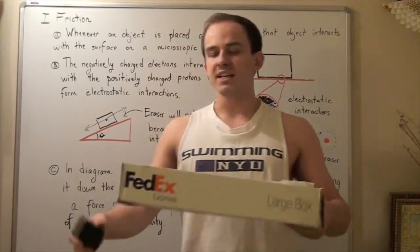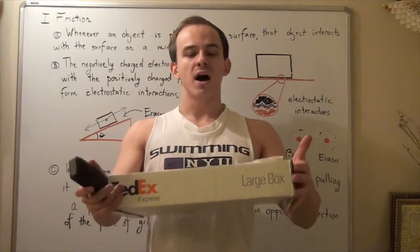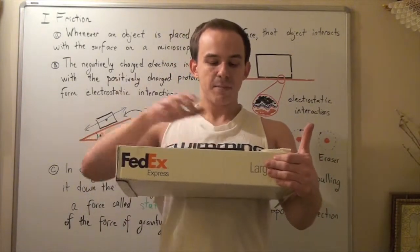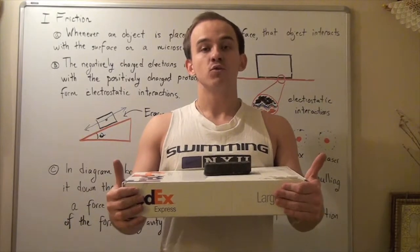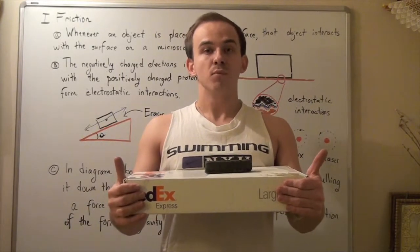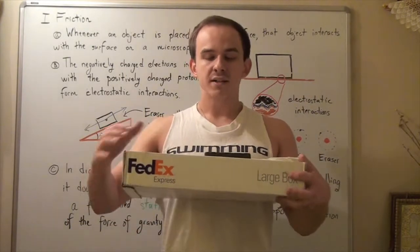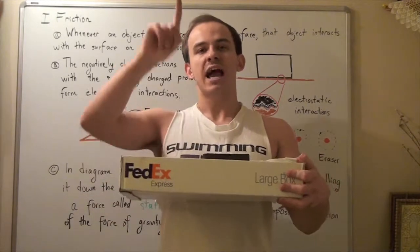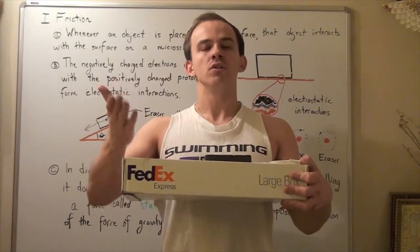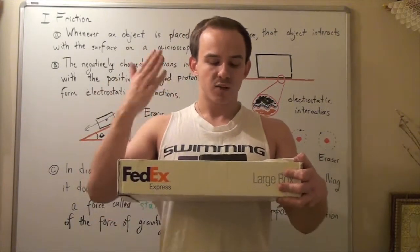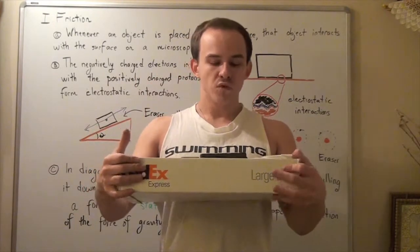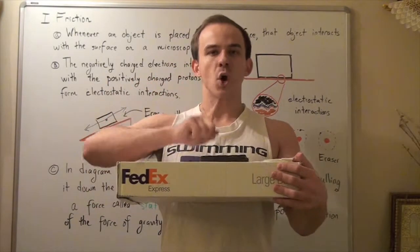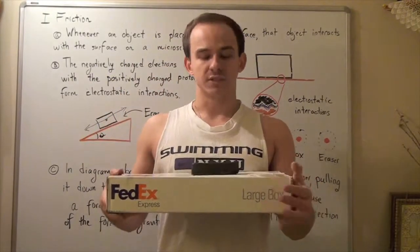But what happens when I place a barrier, such as this box, between the ground and my eraser? My eraser does not move, because the box is exerting an equal and opposite force pointing upward. This is called the normal force. The two forces — gravity pointing down and the normal force pointing up — cancel out, creating a net force of zero.